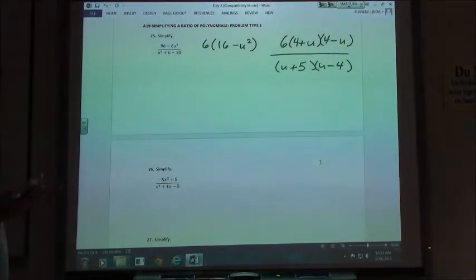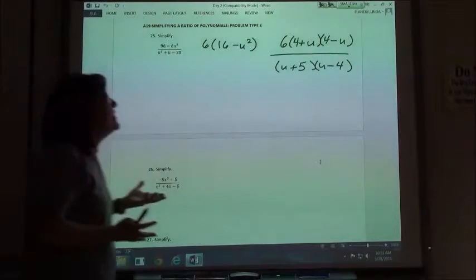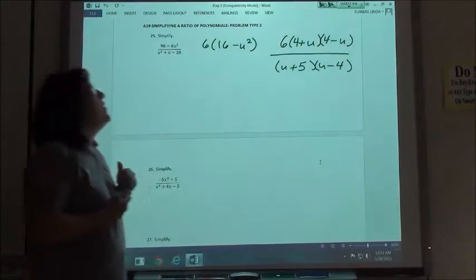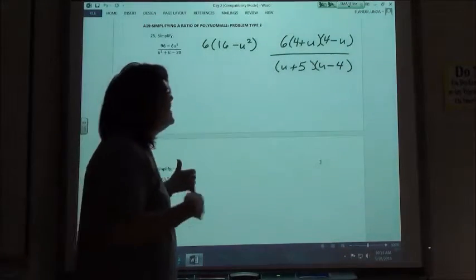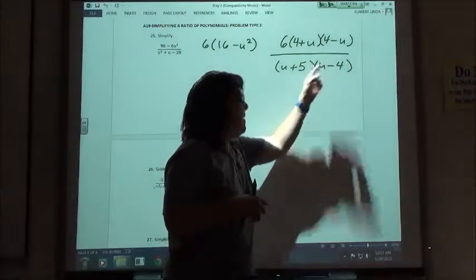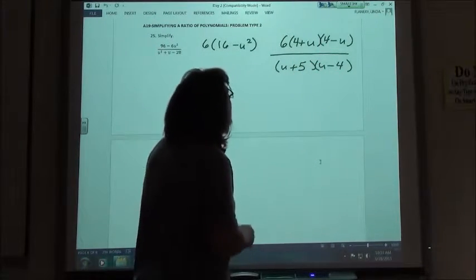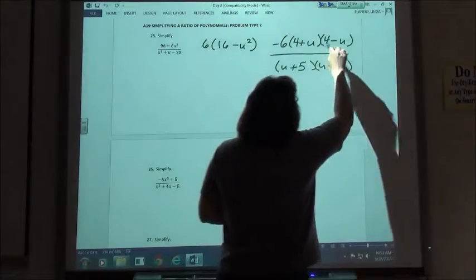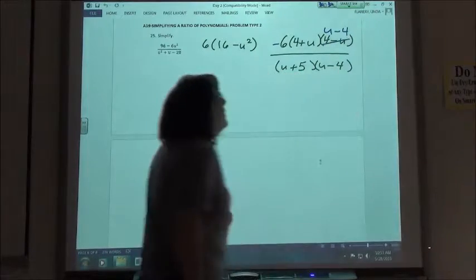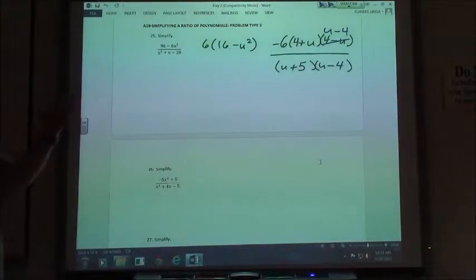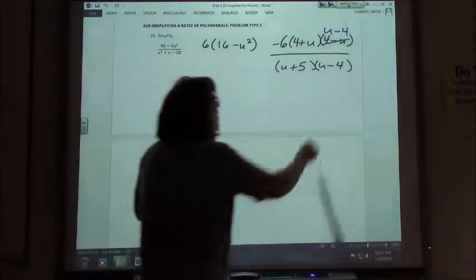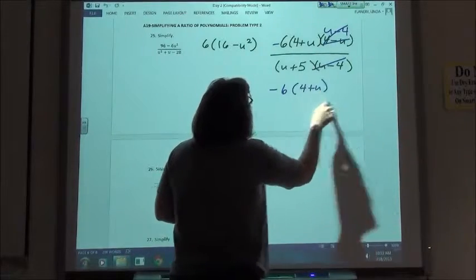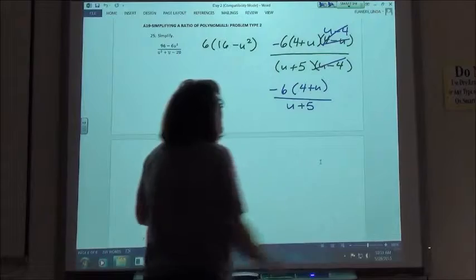Now in this case, I look at it and say, I don't have anything that's exactly the same, but if I could switch it around to u minus 4 instead of 4 minus u, then they would be the same. So all I'm going to do here is factor out a negative 1. When I factor out a negative 1, it's going to make that a negative 6 instead of a positive 6, and make this u minus 4, basically just switching both of those signs. Now I can go ahead and cancel that out. So those will cancel. I have negative 6 times 4 plus u over u plus 5 for my answer.